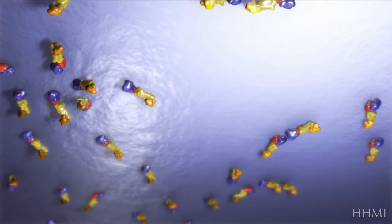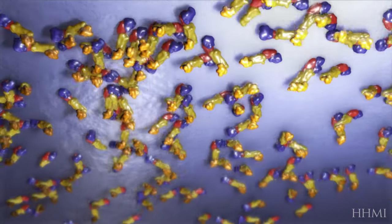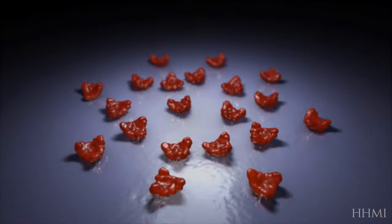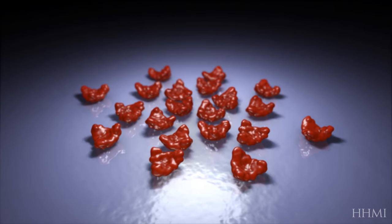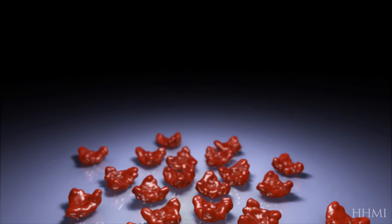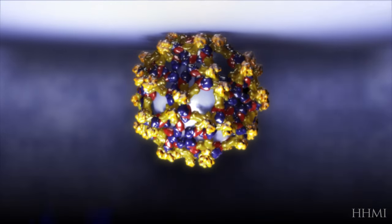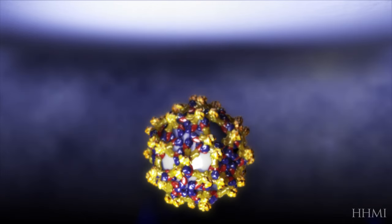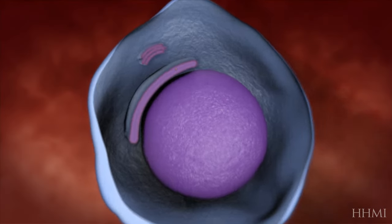The envelope proteins aggregate in the lumen of the endoplasmic reticulum, and the capsid proteins aggregate on the cytoplasmic side. A viral RNA binds to the capsid protein and is packaged into a new virus particle as it buds off into the endoplasmic reticulum. The virus is still immature.